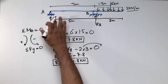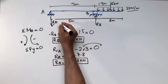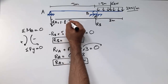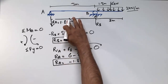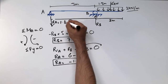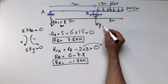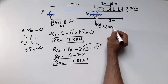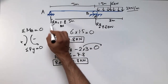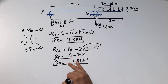The negative sign indicates our assumed direction for RA was wrong, so RA actually acts downward with a magnitude of 1.8 kN. RB = 7.8 kN acts upward. When your sign changes, it means your assumption was wrong and you should reverse the direction.